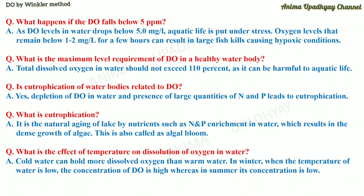What happens if the D-O falls below 5 ppm? If the level of D-O falls below 5 ppm or 5 mg/L in water, the aquatic life is put under stress. And if the oxygen level remains below 1 to 2 mg/L for a few hours, it can result in large fish kills, causing hypoxic conditions. The total dissolved oxygen in water should not exceed 110% as it can be harmful to aquatic life.